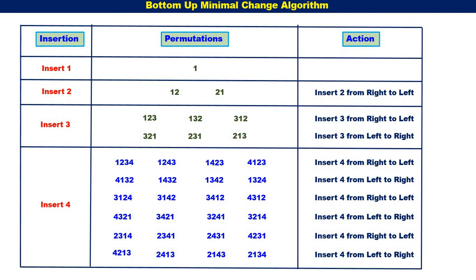So we have got 24 permutations here. You can observe in this method: we found all the permutations of {1}, then all the permutations of {1, 2}, then all the permutations of {1, 2, 3}. Using the 6 permutations of the set {1, 2, 3}, we got the 24 permutations for the set {1, 2, 3, 4}. Incrementally, we are getting the permutations. The operation is very simple — we just start from right to left, then left to right, right to left, alternatively.